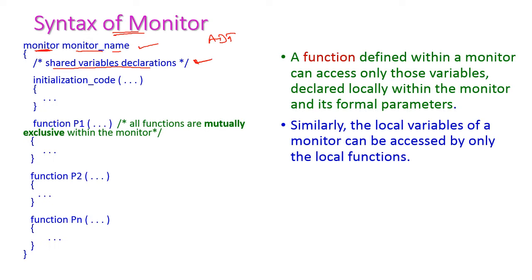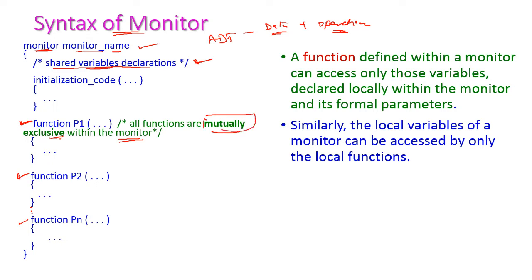As we have seen, the ADT contains data plus operations. Here we are having data by means of shared variables and operations which are nothing but the functions — function P1, function P2, up to function Pn. We are having n functions. The functions are the operations, and these functions are mutually exclusive within the monitor. Only one function will be called for execution at a time; we cannot call two or three functions simultaneously.